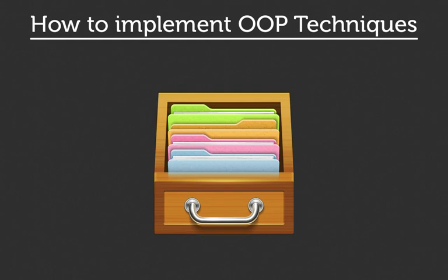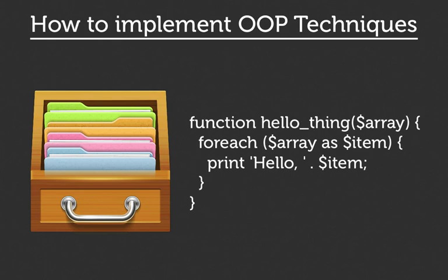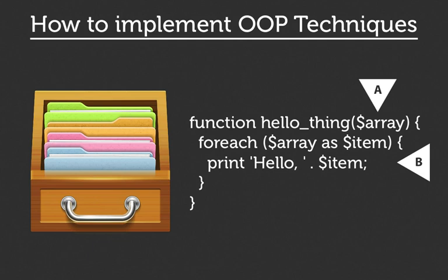A lot of PHP programmers started by simply hacking away and trying to get something that's functional, and what you end up with is something called procedural code. You have variables and you have functions, and the role of the functions is to get from point A to point B — to complete some kind of task. For example, we might convert data from one format to another, or take some data in an array and organize it alphabetically. The idea is that you're constructing your code so that you step through these different procedures.